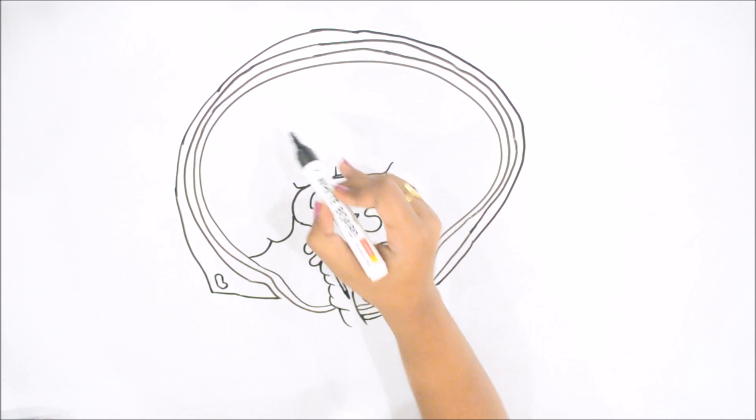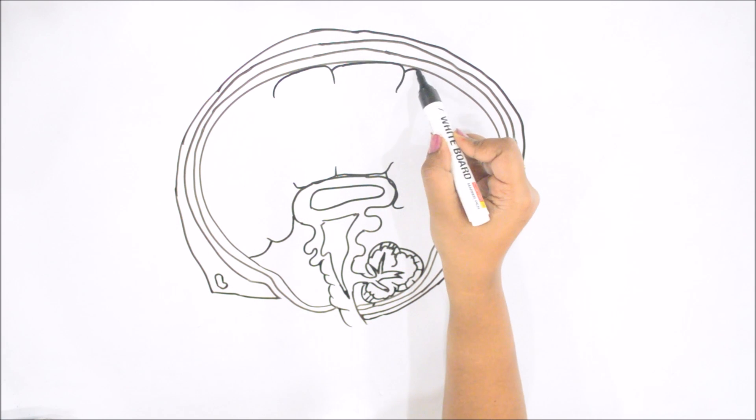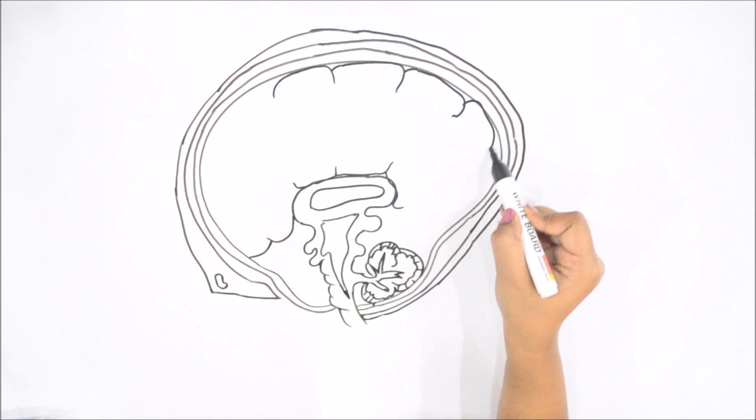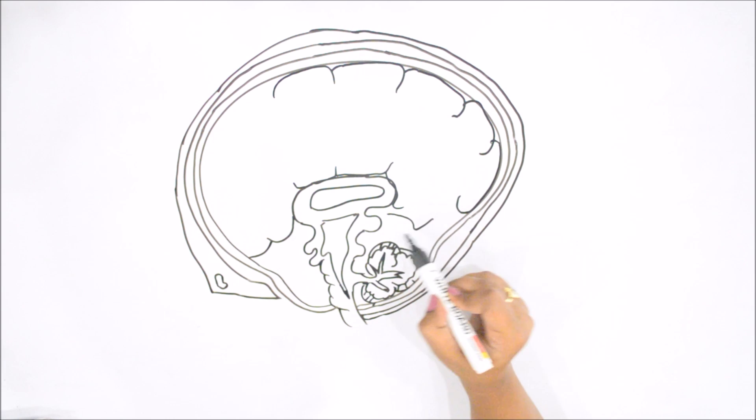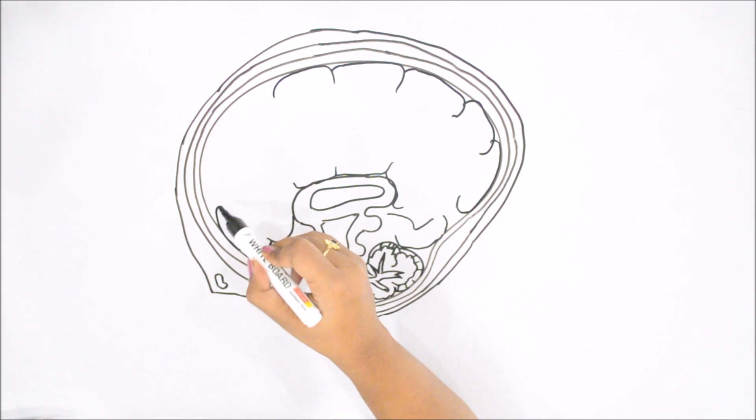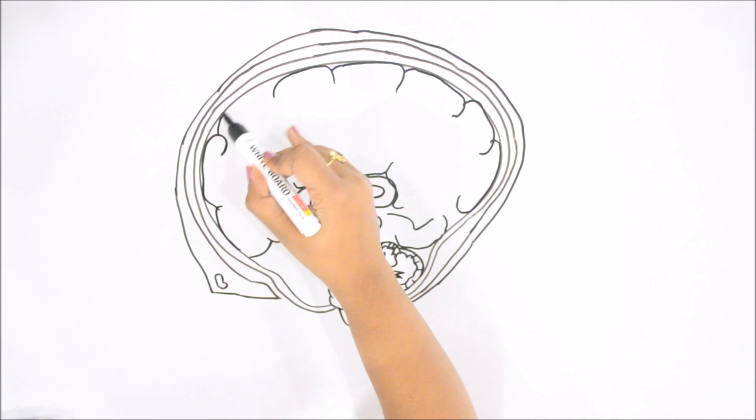To draw it, we will make some structure like this. First, we will make outline to give it a 3D look. It is highly coiled portion containing various neurons in it, specialized for various functions like hearing, touch, etc.